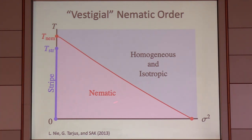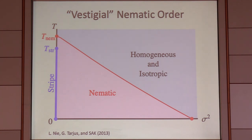So this is what the phase diagram comes out to — I did a large-N calculation, but I knew everything about how it was coming out on the basis of theorems. The good news is that once I've taken into account the effects of disorder, rather than this vestigial nematic phase being too small to see without cheating, it becomes the whole phase diagram.